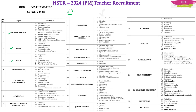The mathematics syllabus contains 24 chapters: Number System, Surds, Sets, Progressions, Commercial Mathematics, Statistics, Permutation and Combination, Probability, Basic Concepts of Algebra, Polynomials, Linear Equations, Exponents, Quadratic Equation, Variation, Basic Geometrical Ideas, Triangles, Quadrilaterals, Polygons, Circles, Mensuration, Trigonometry, Coordinate Geometry, Symmetry, and Matrices.